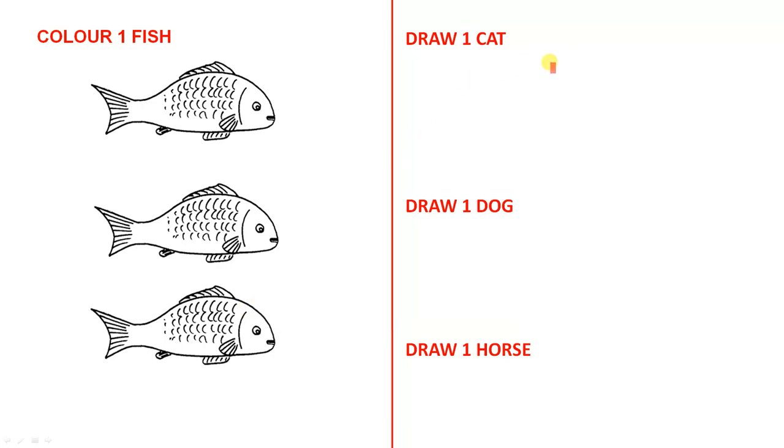And we know how much students love drawing, especially young students. So you would ask them to draw one cat, one dog, one horse. You can pick any other animal or any other object, but it just gives them the opportunity to recognize the number one and what it stands for in real life, and that's really, really important.